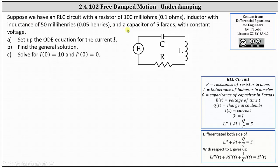For an RLC circuit, if R is the resistance, L is the inductance, C is the capacitance, E(t) is the voltage, Q(t) is the charge, and I(t) is the current, where Q' equals I, then L times I' plus R times I plus Q divided by C equals E.